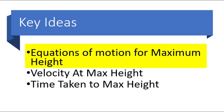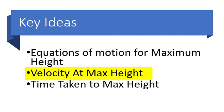The maximum height of a projectile launched from an incline can be obtained by applying the second or the third equation of motion along the y-axis. We also use the concept that the y-component of velocity at the maximum height position is 0, or the concept that the time taken to reach maximum height is half the time taken for the entire flight.